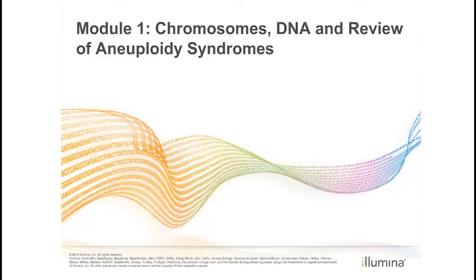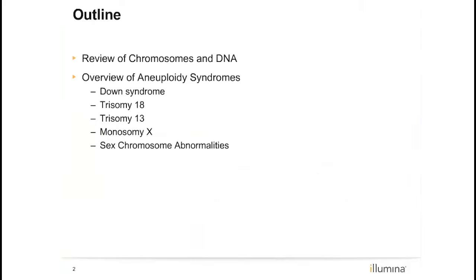This first module begins with a background discussion of chromosomes and DNA and a review of common chromosome aneuploidies. After viewing this webinar, you should have a basic understanding of chromosomes and DNA, terminology used when discussing genetic conditions, and be able to identify common features of Down syndrome, trisomy 18, trisomy 13, monosomy X, and other sex chromosome abnormalities.